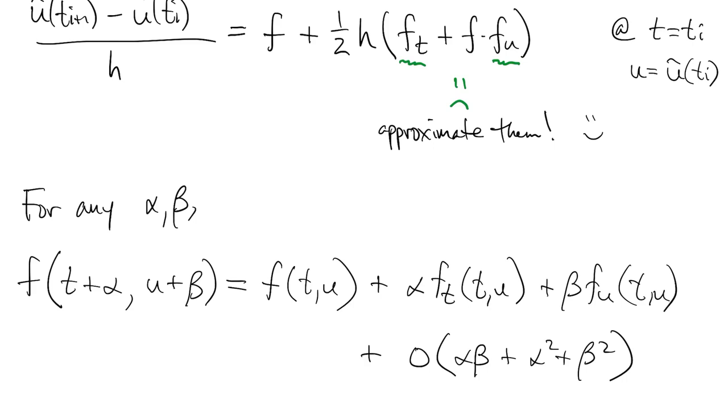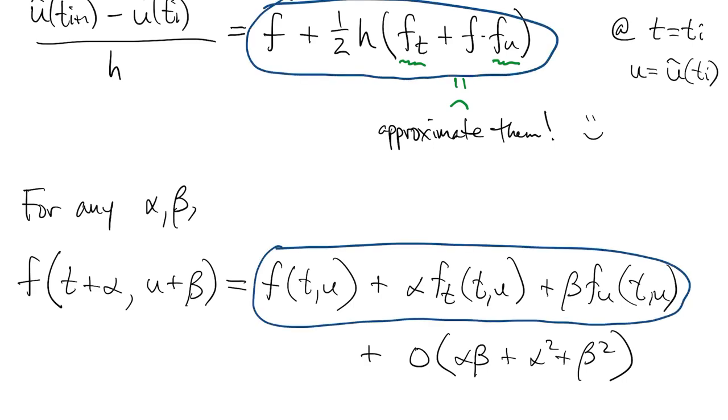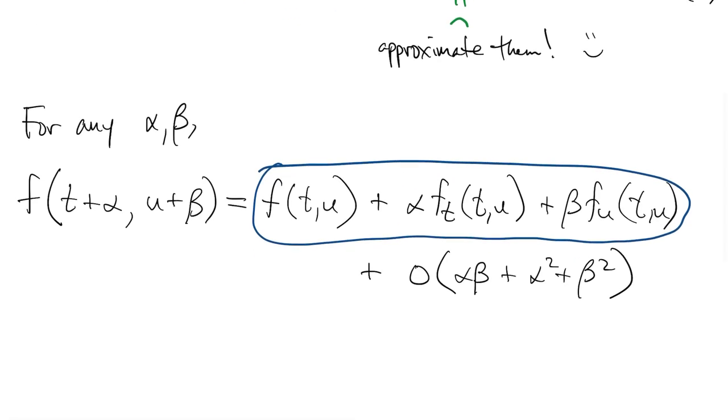Comparing this now to the expression we got for the truncation error in terms of f and its partial derivatives, we see that we can match the beginning of this by putting alpha equal to h over 2 and beta equal to h over 2 times f.